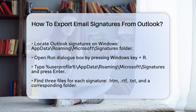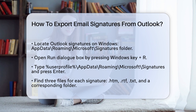First, you need to locate where your Outlook signatures are stored. On a Windows computer, you can find them in the AppData/Roaming/Microsoft/Signatures folder. To get there, press the Windows key and the R key at the same time to open the Run dialog box. Type %UserProfile%\AppData\Roaming\Microsoft\Signatures and press Enter.